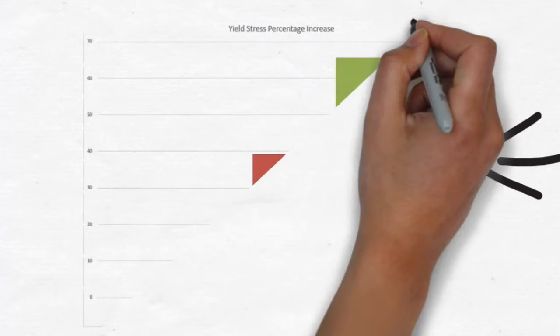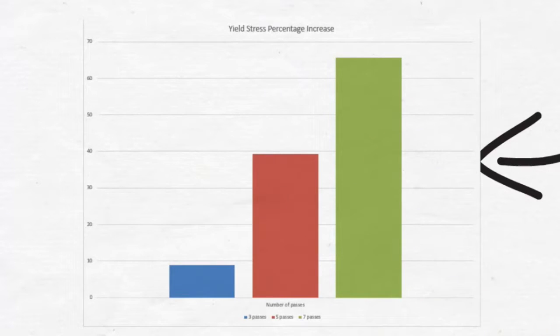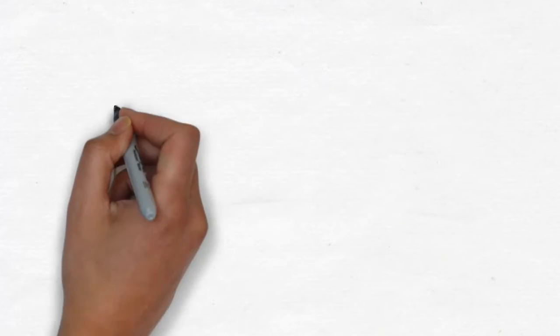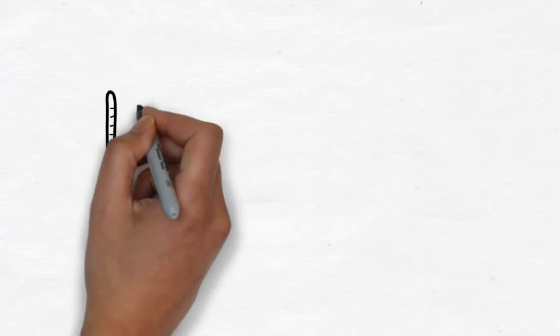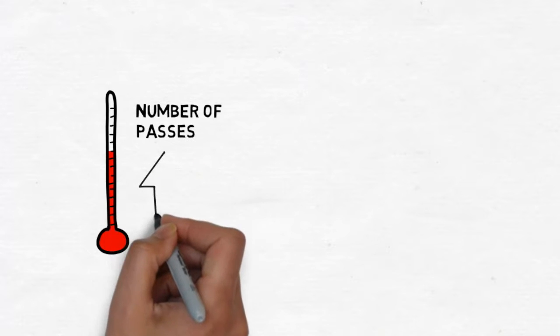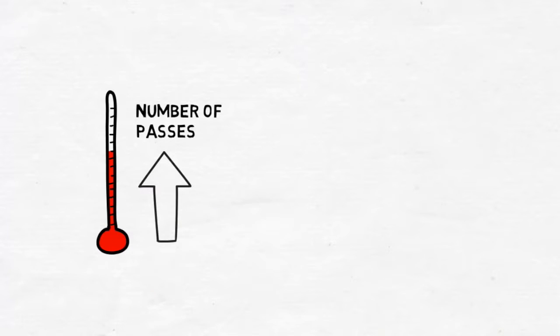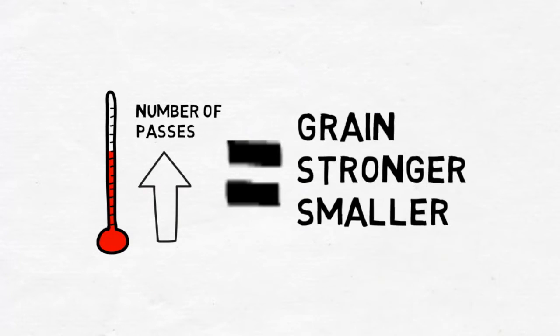The yield strength for 3 passes increased by 9%, 5 passes by 40%, and 7 passes by 65%. In other words, the more the number of passes at high temperatures above the austenitic line in the iron-carbon phase diagram, the smaller the grain size and the stronger the material is.